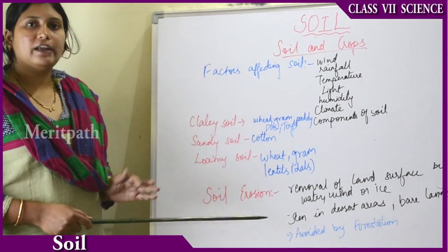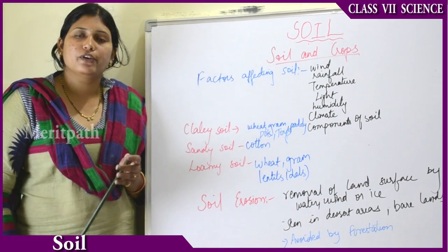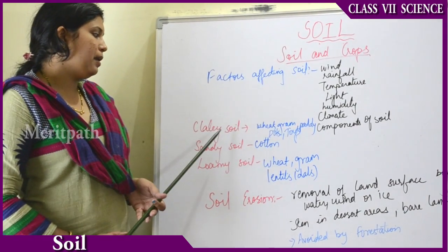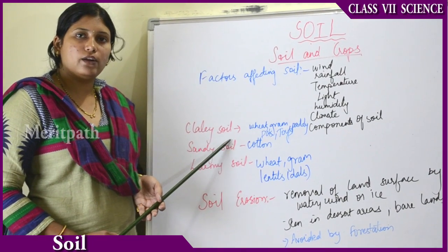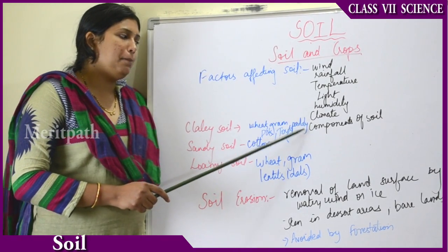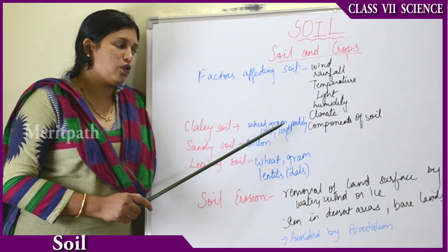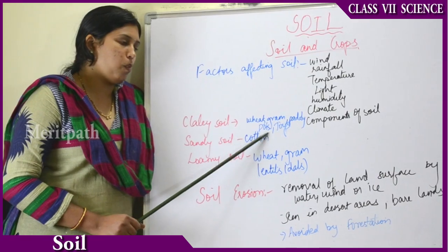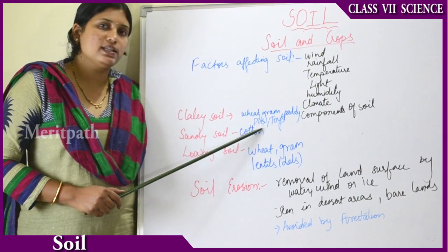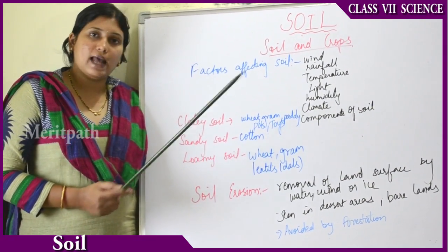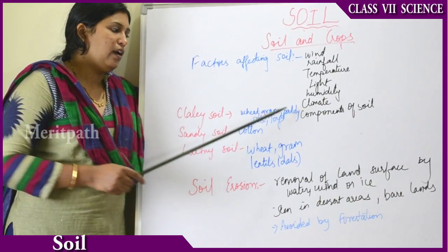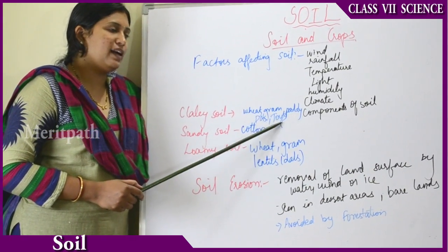In India, different regions have different types of soil, so different crops are grown in different soils. In clay soil, which has the highest water holding capacity, crops like wheat, gram, and paddy (rice) can be grown. Clay soil is also used for constructing pots, toys, and statues. Sandy soil doesn't hold much water, so only cotton — which doesn't require much water — can be grown in it.